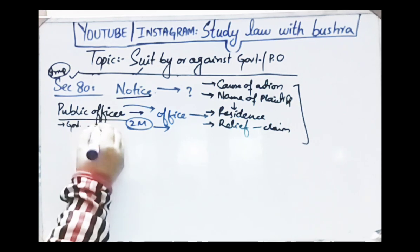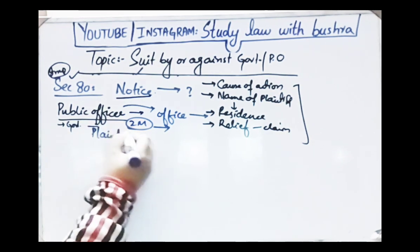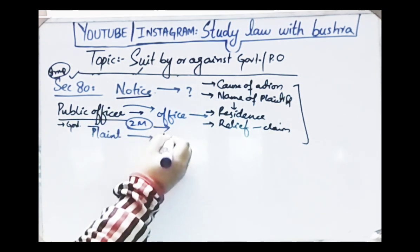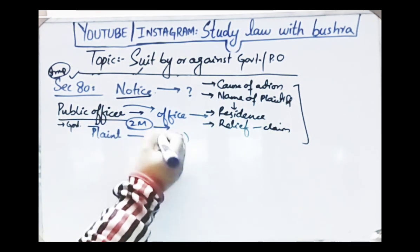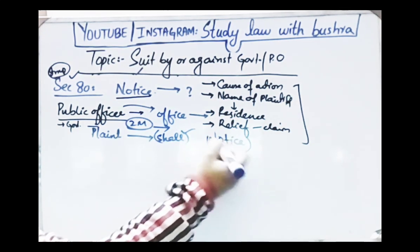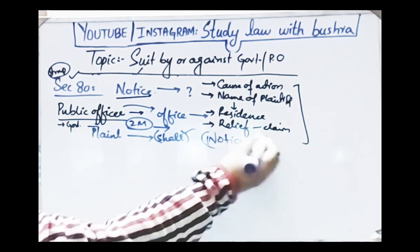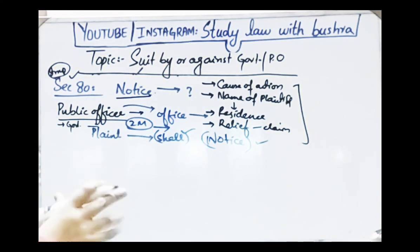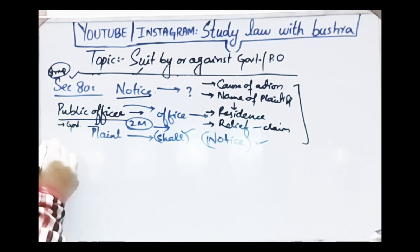So in both government and public officer cases, the notice must contain these credentials and this description. After sending the notice, when the two-month time period has passed and you file the suit, it is compulsory under sub-clause 1 — the word 'shall' is used — that in your plaint you must mention that you had sent notice two months before, and now after two months have passed, you are filing the suit.